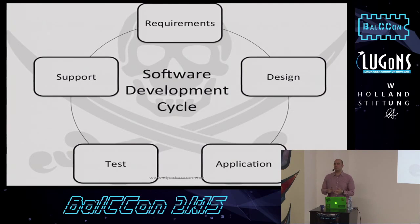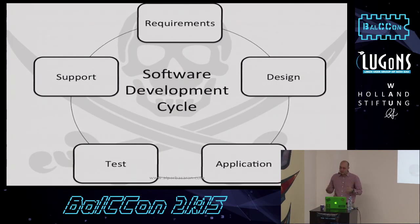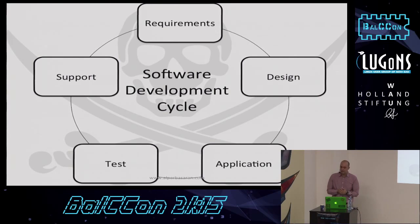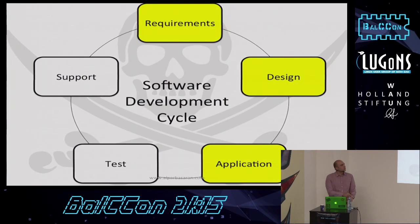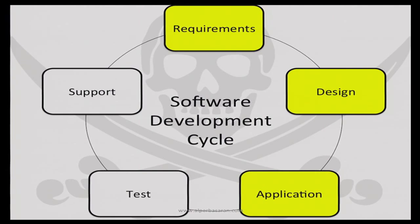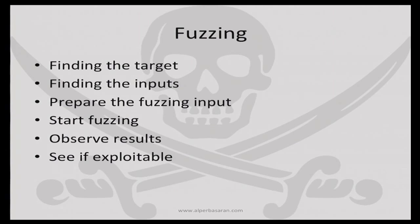Here's an overview of the software development cycle: requirements, design, coding, testing, deployment. The three steps highlighted in yellow — requirements, design, and coding — are where we introduce vulnerabilities. If we make no mistakes in those three steps, then in testing and deployment we will be almost okay. So those are the three most critical steps for security.